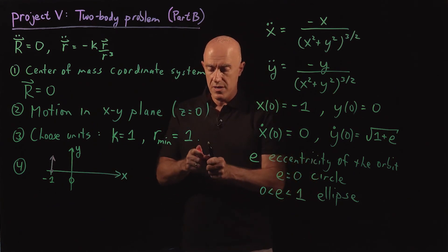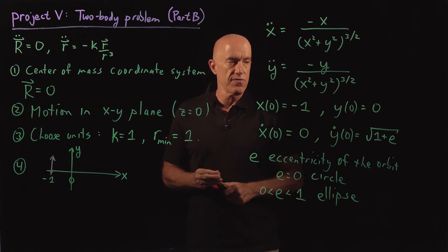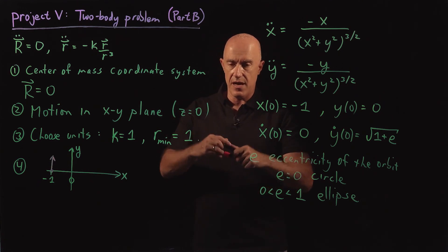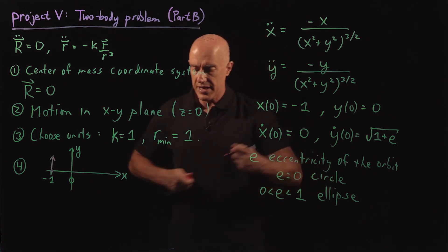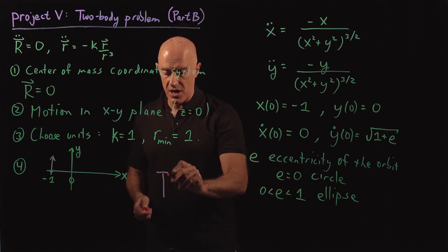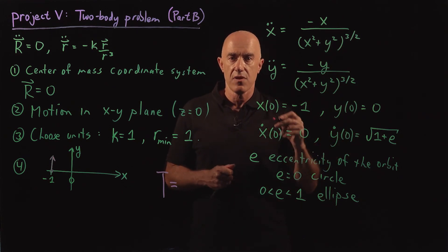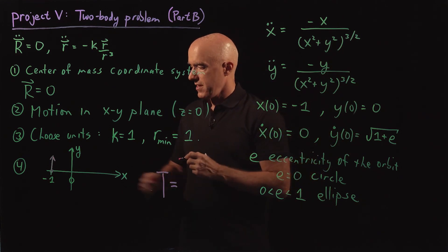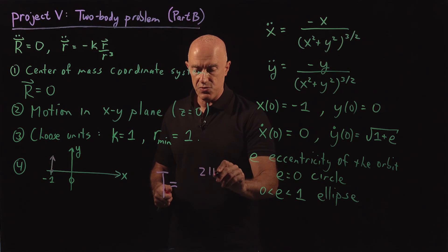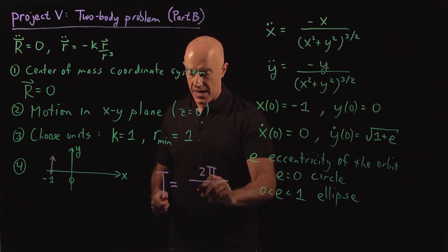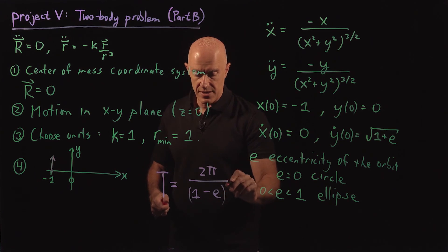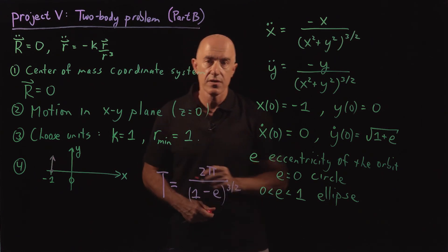One more matter. If you go further in the mathematics, you can calculate what the period of these orbits are. The period is the time it takes to complete one orbit. And that will turn out to be two pi divided by one minus e raised to the three halves power.